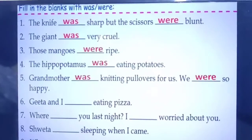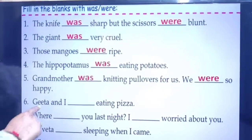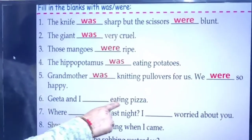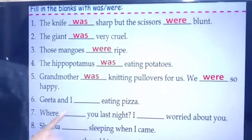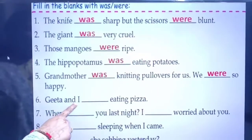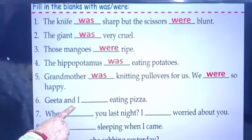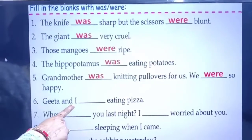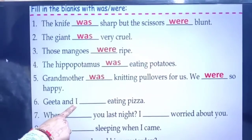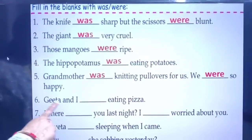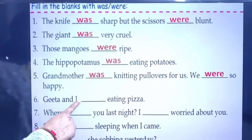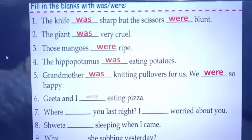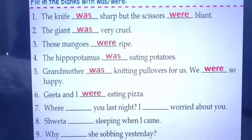Next: 'Geeta and I ___ eating pizza.' Here, Geeta and I — two persons are at the subject place, so it is plural. We write: Geeta and I were eating pizza.